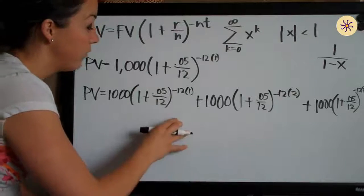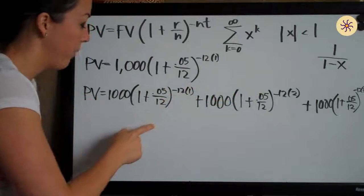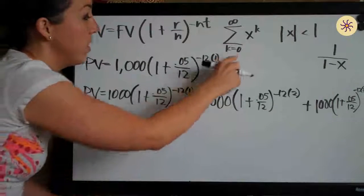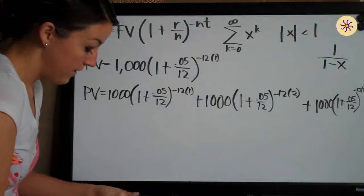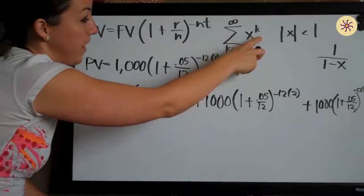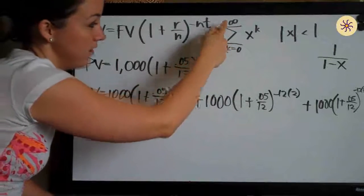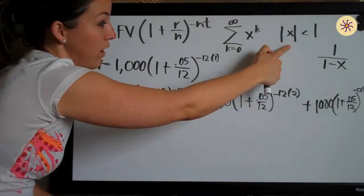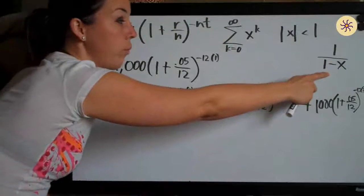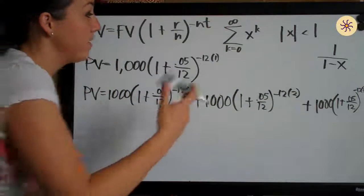Now that we recognize this as an infinite series, we use the geometric series formula to solve for present value. The formula states: if we have a series in the form x^k, where k starts at zero and goes to infinity, and the absolute value of x is less than one, then the series converges to the value 1/(1 − x).